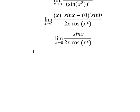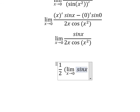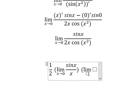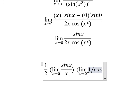So I will put number 2 outside. We have 1 over 2, and we have the limit x approach to 0 sin(x) over x, multiply by the limit x approach to 0, and that's about 1 over cos(x²).